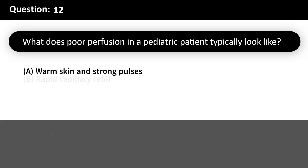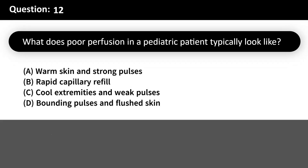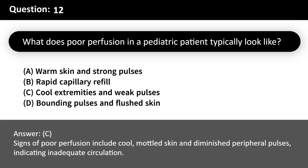What does poor perfusion in a pediatric patient typically look like? Answer: B. Signs of poor perfusion include cool, mottled skin and diminished peripheral pulses, indicating inadequate circulation.